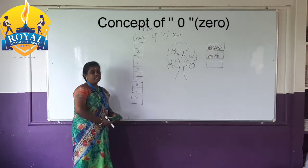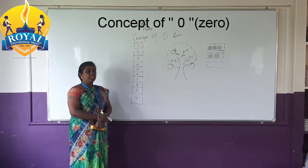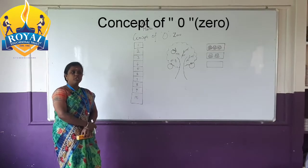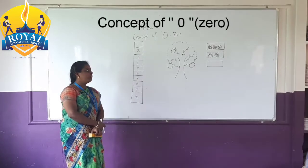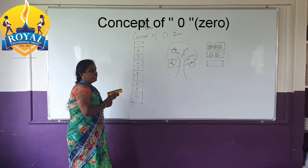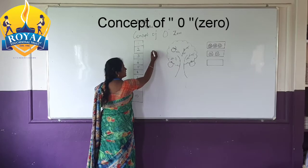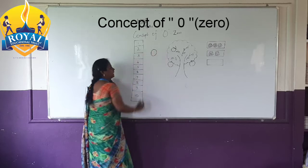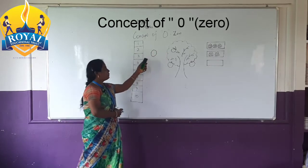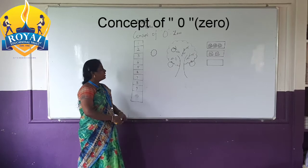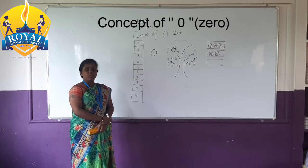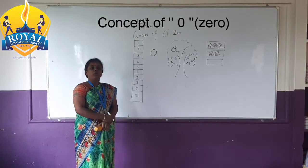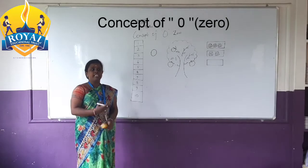Okay children, today we are going to see the concept of 0. The concept of 0. The number 0 is written as 0. This means nothing, empty. What is 0? The number 0 denotes no objects. That means nothing, empty.